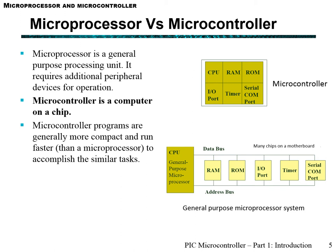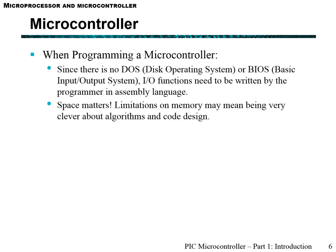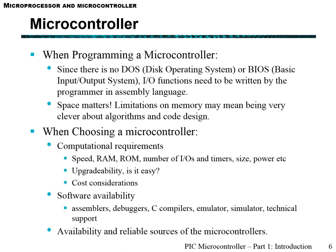Microcontroller programs generally run quicker and more compactly than microprocessor tasks. However, it does take more effort to write code for microcontrollers due to their instruction set, though this can be overcome using high-level languages such as C. When programming a microcontroller, you interact directly with the hardware, and memory space matters due to hardware limitations. There is a trade-off between hardware limitations and the cleverness of the code and algorithms you implement, and that depends on each application.